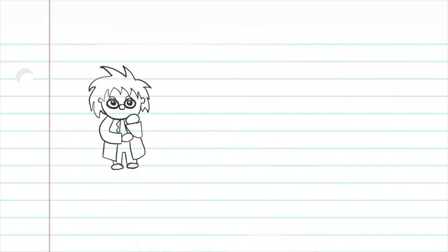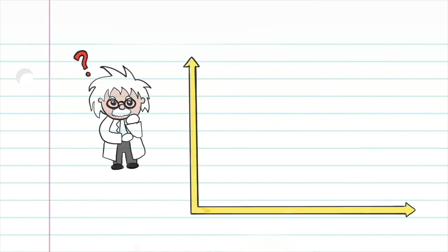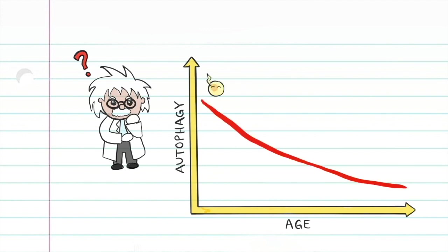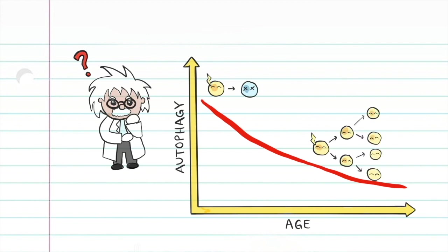Recently, scientists have taken a particular interest in studying autophagy for use in anti-aging and tumor suppression. Autophagy is best known as the body's way of turning the clock back and creating younger cells. When your cells are stressed, autophagy is increased in order to protect you, which helps enhance your lifespan. Autophagy also declines as we age, so cells that no longer work or may do harm are allowed to multiply, which may manifest as cancer. This is why some researchers are looking at the possibility that autophagy may lower the risk of cancer.